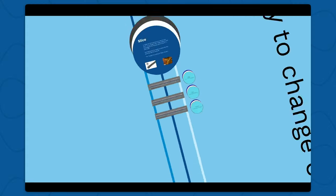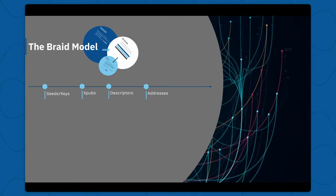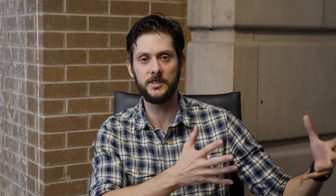What this gives us is that in this collaborative environment, two people that are part of the same quorum — because we have the same model for how these braids are built — can independently generate the same address. We know exactly how those things are going to be compiled. You can see how these ideas map onto the terms we talked about earlier: seeds and keys, XPUBs which are the strands, strands come together into descriptors, and from the descriptors of the braids we can take a slice to generate addresses.